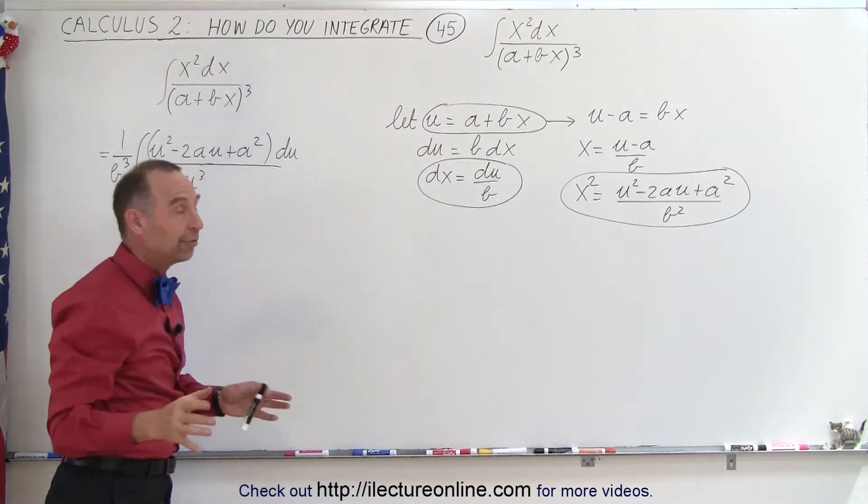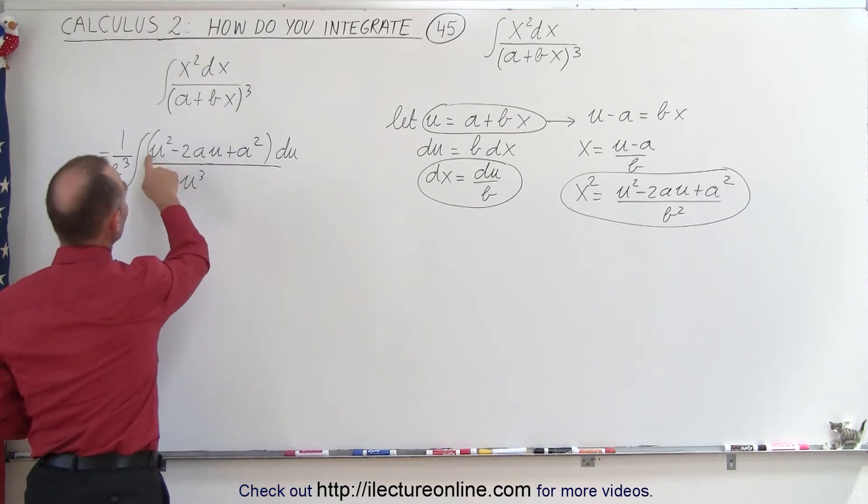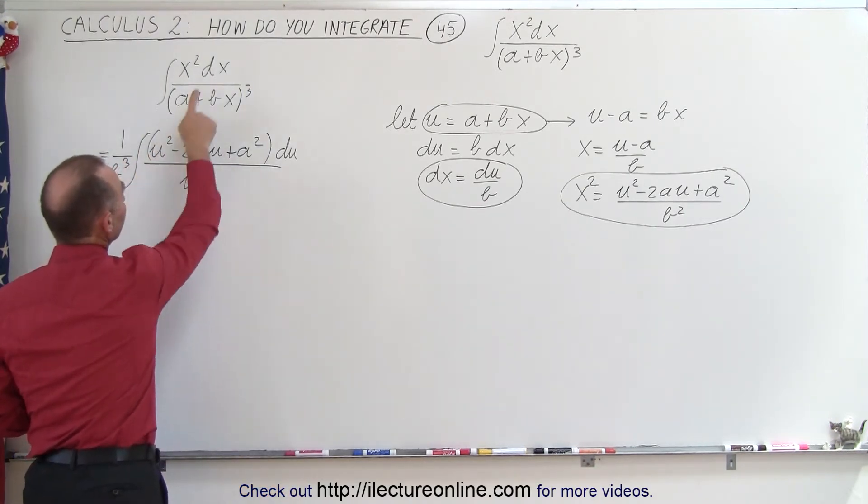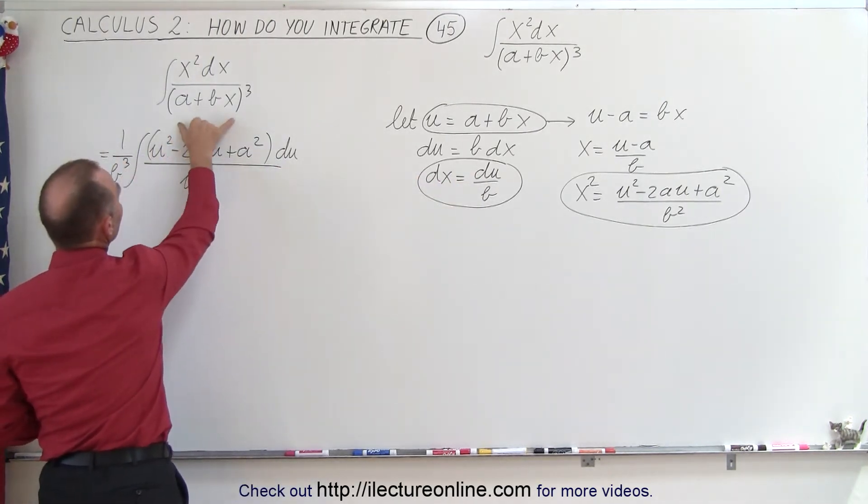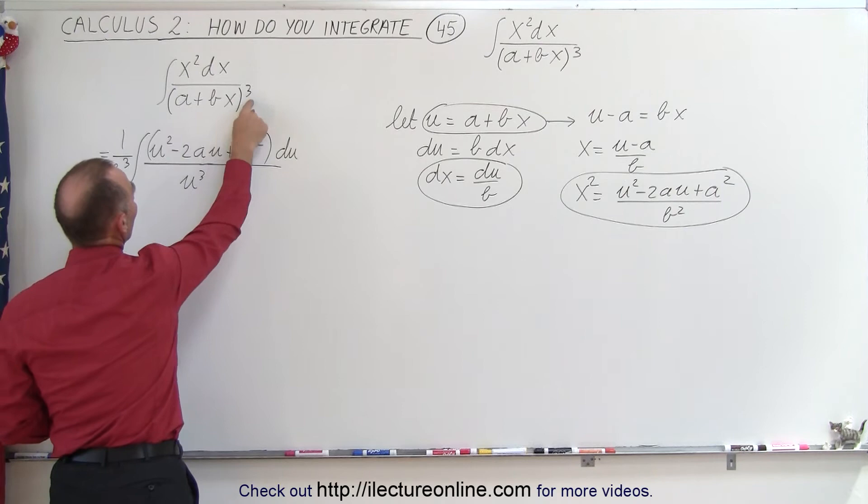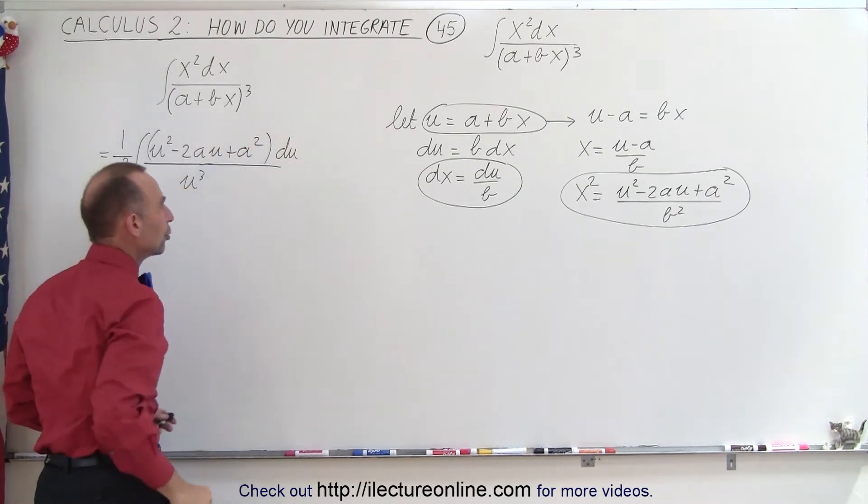When we do, we get the following. We get x squared, which is this quantity, divided by b squared. dx will be du over b, that's where we get the b cubed from, and in the denominator, a plus bx quantity cubed will now be u cubed.